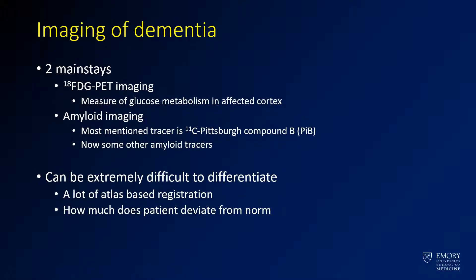Previously they were using an agent called Pittsburgh Compound B, and now there are direct amyloid tracers available. These entities can be extremely difficult to differentiate, and often you have to use atlas-based registration to compare to a normal database so that you know how much it deviates from normal.